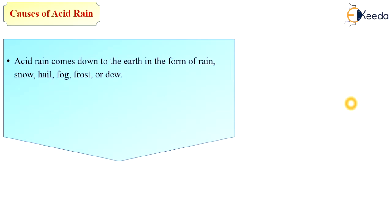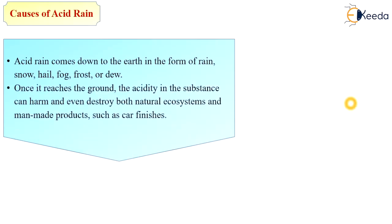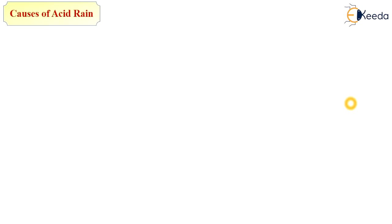Acid rain comes down to the earth in the form of rain, snow, hail, fogs, frost, etc. Once it reaches the ground, the acidity in the substances can harm and even destroy both natural ecosystems and man-made products such as car finishes and buildings.